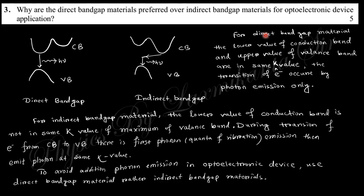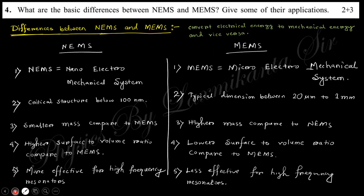For optoelectronic devices involving light and electronic transitions from band to band, indirect bandgap materials have phonon vibrational energy that affects optoelectronic properties. That's why direct bandgap materials are preferable for optoelectronic devices.